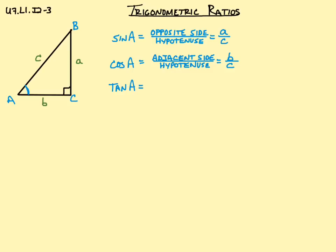And then finally, we have tangent of A, and tangent is always opposite side over adjacent side. This seems to be everybody's favorite one to use. Everyone always likes using tangent. So opposite over adjacent, and opposite is little a, adjacent is little b, so we have a over b.